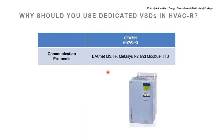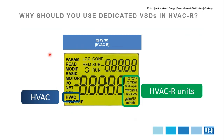This HVAC drive also carries dedicated communication protocols: BACnet MSTP and Metasys N2. The HMI display was also especially designed for HVAC applications. The parameter groups include a specific HVAC category where all dedicated functions can be found in one place. On the right side of the display, you can find HVAC-specific units such as temperature in Celsius or Fahrenheit, pressure in bar or PSI, and flow in gallons per minute, cubic meters, or cubic feet.